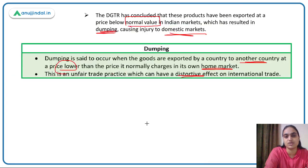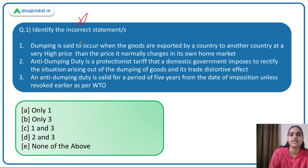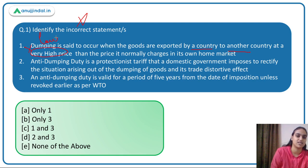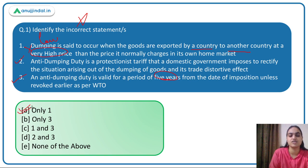Coming back to the question: we have to identify the incorrect statement. The first statement says dumping occurs when goods are exported at a very high price than the home market price — that is incorrect, it should be a very low price. The second and third statements about anti-dumping duty being a protectionist tariff and lasting five years per WTO are both correct. The answer is option A.